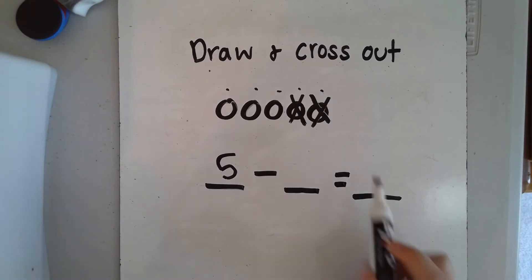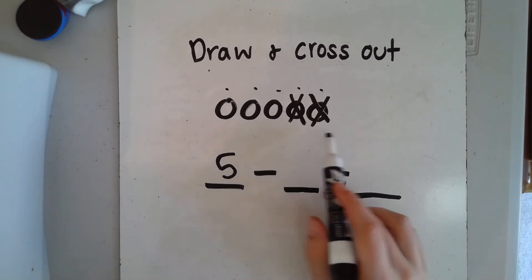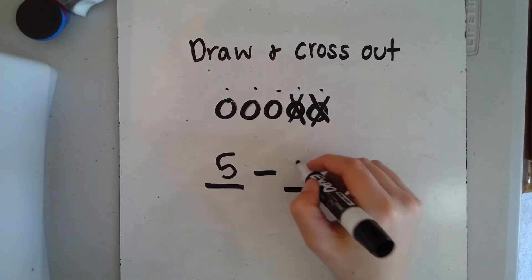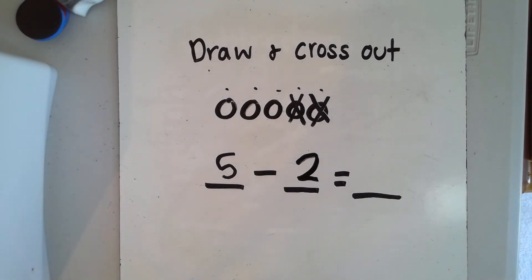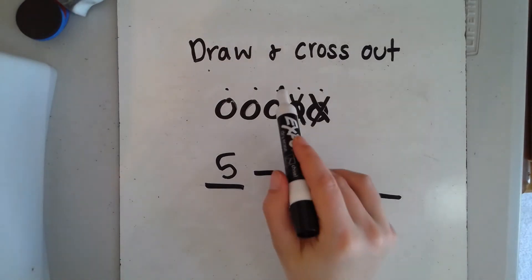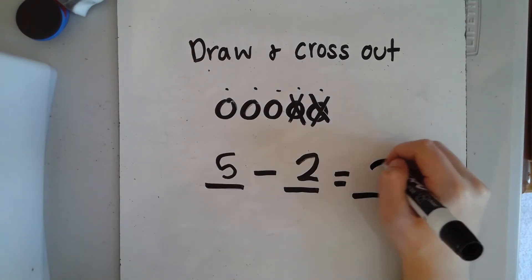How many circles did I take away or cross out? Let's see: one, two. I took away two circles. Now let's see how many circles I have left over—that will be my answer, and that's how many circles that I did not cross out. Let's count, ready? One, two, three. I have three circles left over. Five minus two equals three. Good job!